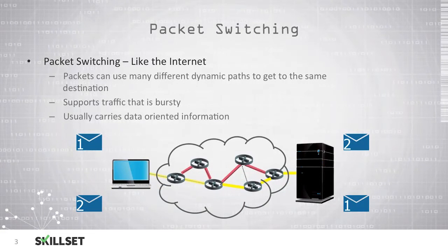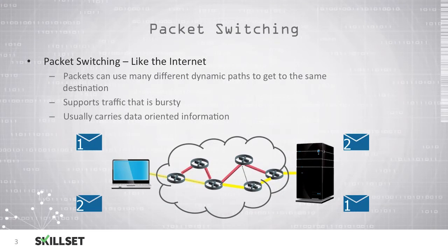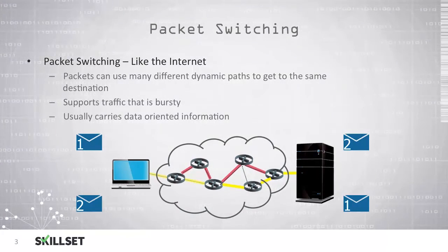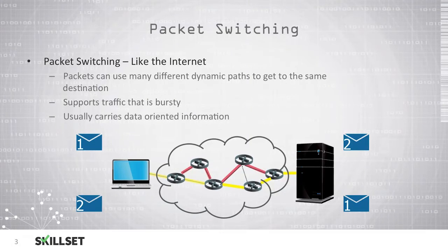Packet switching is how the internet operates. Packets can take many different dynamic paths in order to get to the same destination. This can help you to provide redundancy, because if one link is down, the traffic can go a different route. With a circuit switch network, if the circuit goes offline, you will not be able to send any traffic.